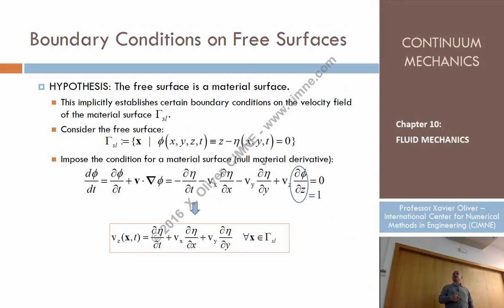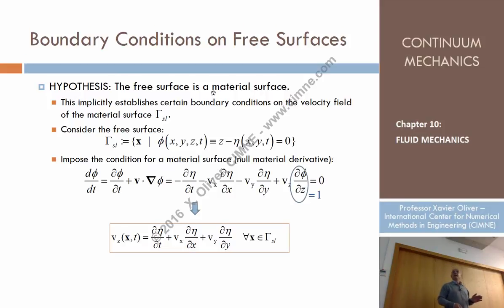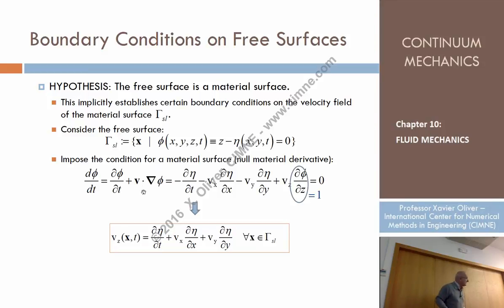Free surfaces are treated using the concept of material surfaces from Chapter 1: moving surfaces always composed of the same set of particles. One condition for a function phi(x, y, z, t) defining a free surface is that its material derivative equals zero — that is, the local derivative plus the convective derivative equals zero.